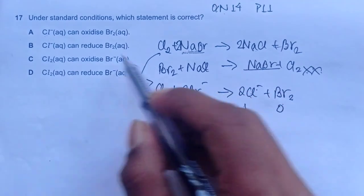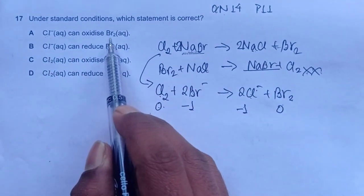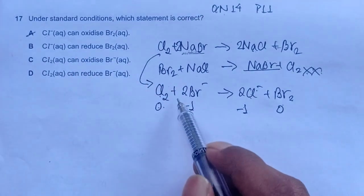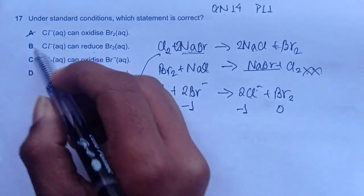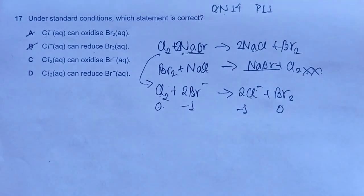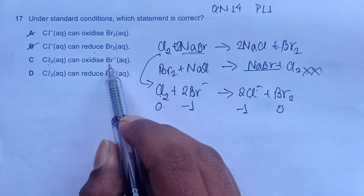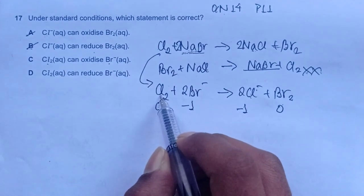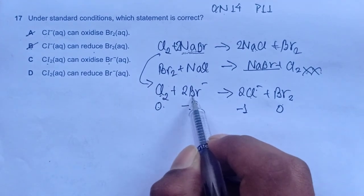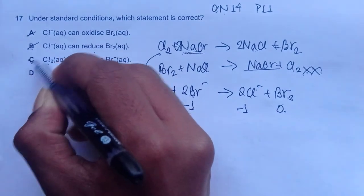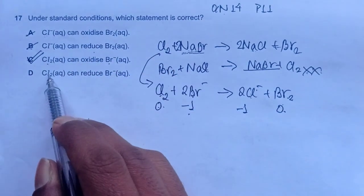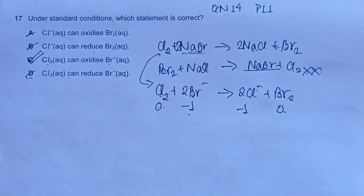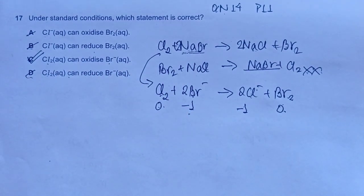So if we check the options, Cl minus can oxidize Br2 aqueous, this is obviously not our correct answer choice. Cl minus can reduce, we have chlorine has been oxidizing bromine. Cl2 can oxidize Br minus. Yes, this is the correct answer. Cl2 aqueous can oxidize Br minus. Br minus has been oxidized minus 1 to 0. So option C is correct. Let's check option D. Cl2 can reduce, obviously reduce is not correct. So option C is correct for question number 17.